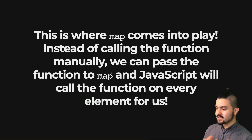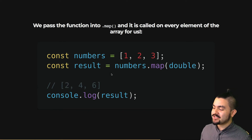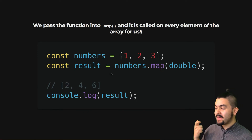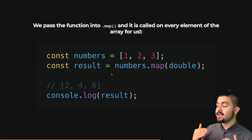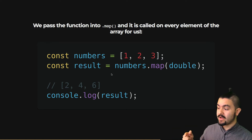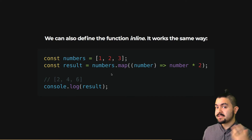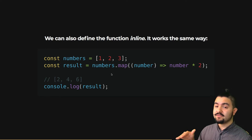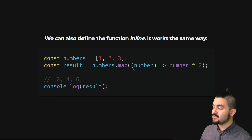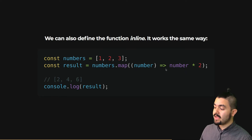Let's see what that looks like. Now we can just say numbers.map, pass in that function that we defined, and under the hood JavaScript will automatically call that function for every element inside of the array and store it in a new array — we now have the array 2, 4, and 6. You can also define the function inline, doing exactly the same thing but defining the function on the same line as the map call. This function will get called on every element inside of the array to create a new array with the values 2, 4, and 6.